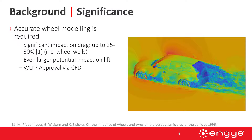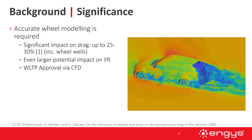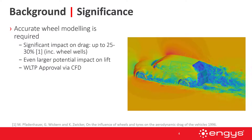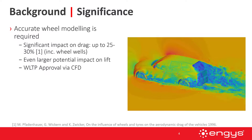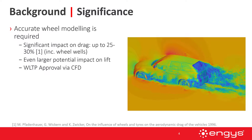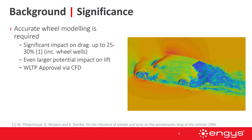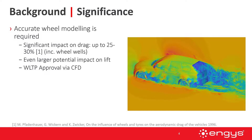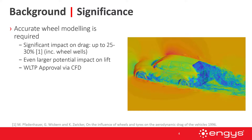Why are we concerning ourselves with tires and wheels? Accurate wheel modeling is really required. Tires and wheels have a significant impact on drag — up to 25 or 30 percent, including the wheel wells themselves. It also has an even larger potential impact on lift, and in terms of WLTP approval we need to have this accuracy within our CFD results in order to actually achieve approval.